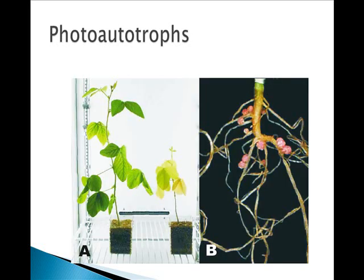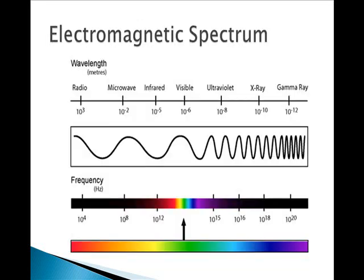The yearly worldwide production of sugar by plants is about 220 billion tons. They all focus on using light as their energy source, so we need to take a look at the electromagnetic spectrum for a moment.